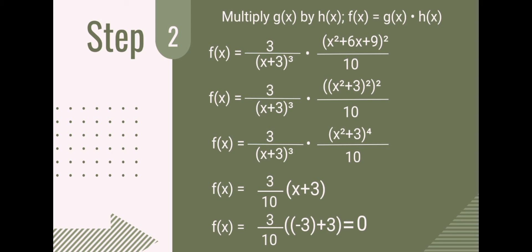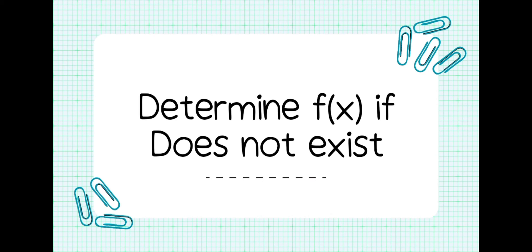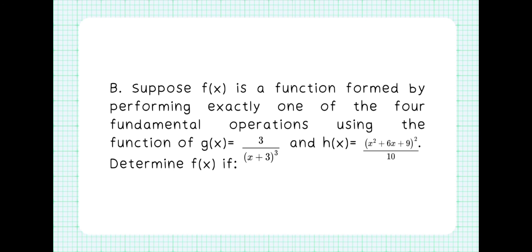So this confirms that the given limit condition is satisfied. I hope you learned something — thank you for listening! Hello everyone! My name is Saisha Ping P. Torres from group 5, and I'm here to show you how to solve number 5, letter B. Suppose f of x is a function formed by performing exactly one of the four fundamental operations. We will determine f of x if the limit as x approaches negative 3 does not exist.